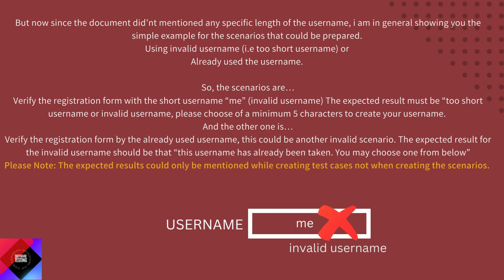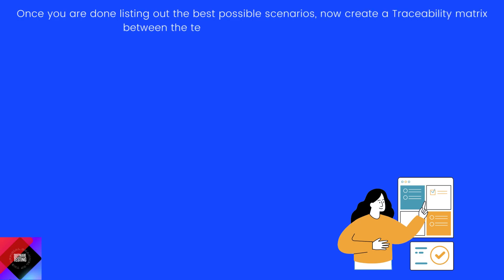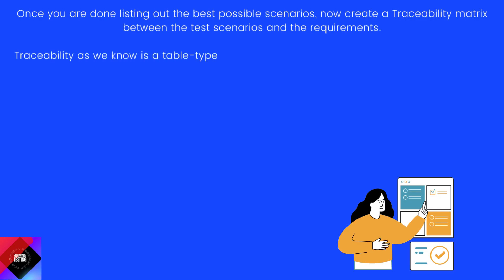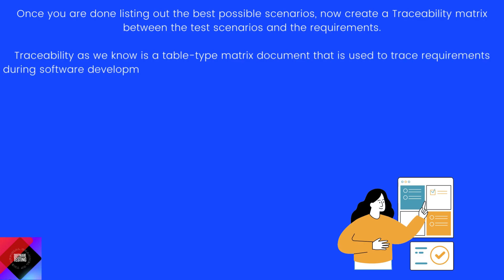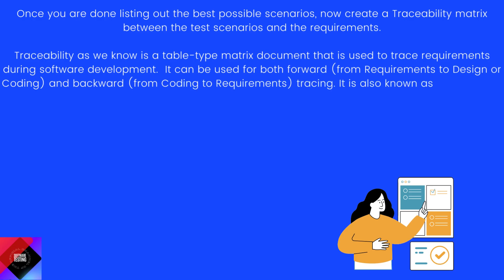Please note: expected results can only be mentioned while creating test cases, not when creating the scenarios. Once you are done listing out the best possible scenarios, create a traceability matrix between the test scenarios and the requirements. Traceability is a table-type matrix document used to trace requirements during software development. It can be used for both forward and backward tracing, and is also known as a requirement traceability matrix or cross-reference matrix.